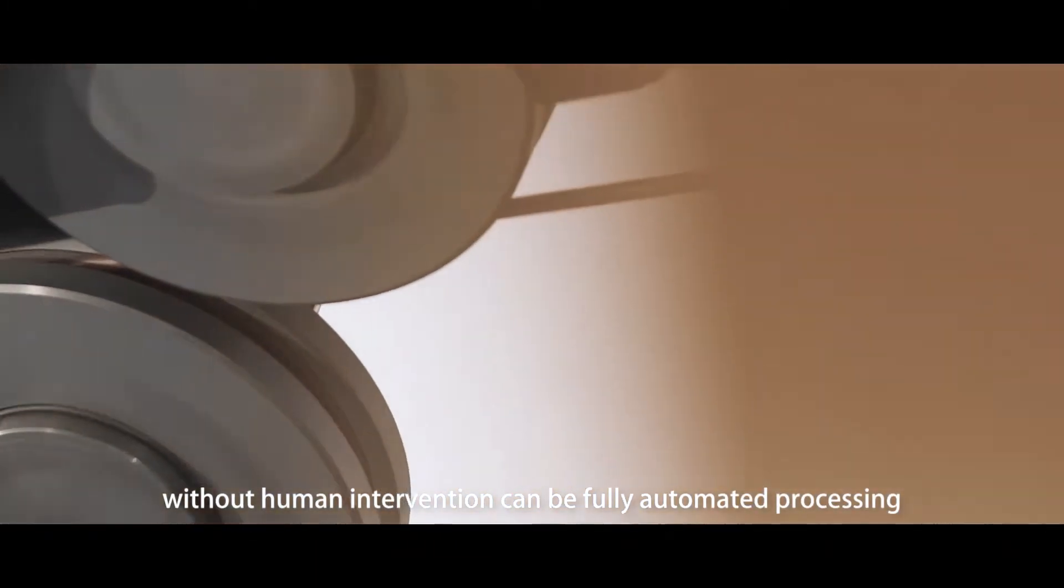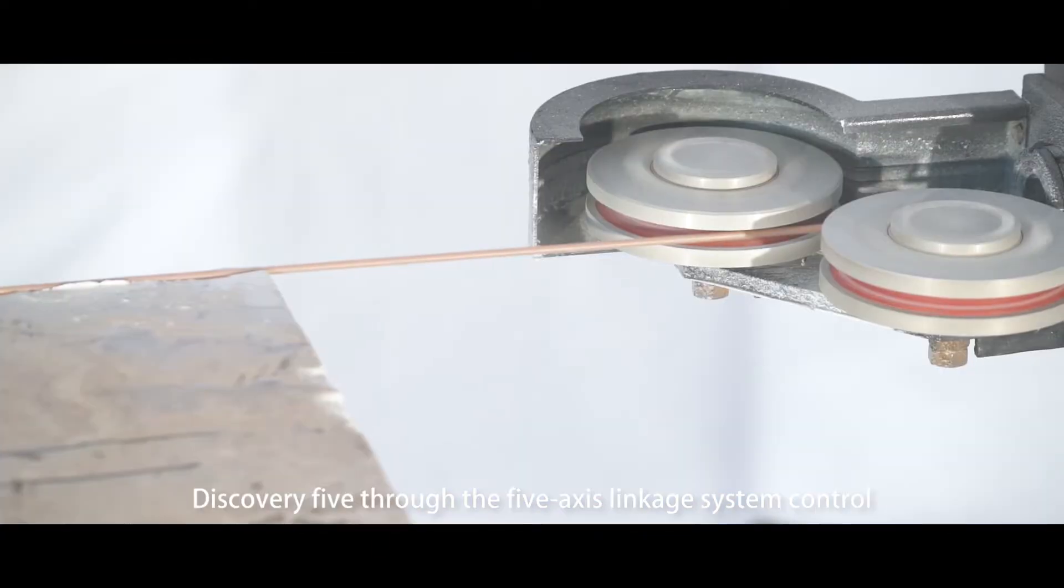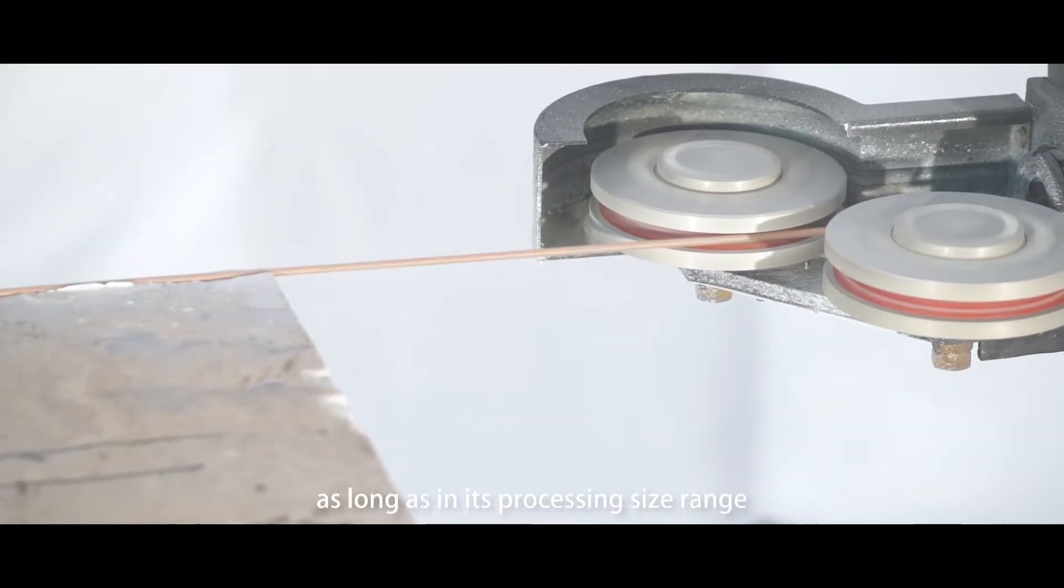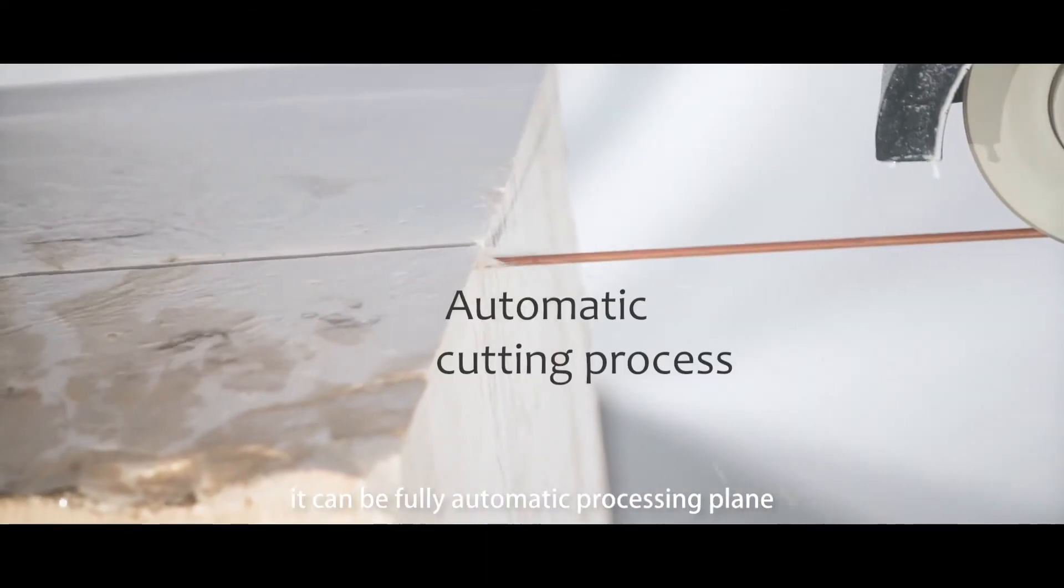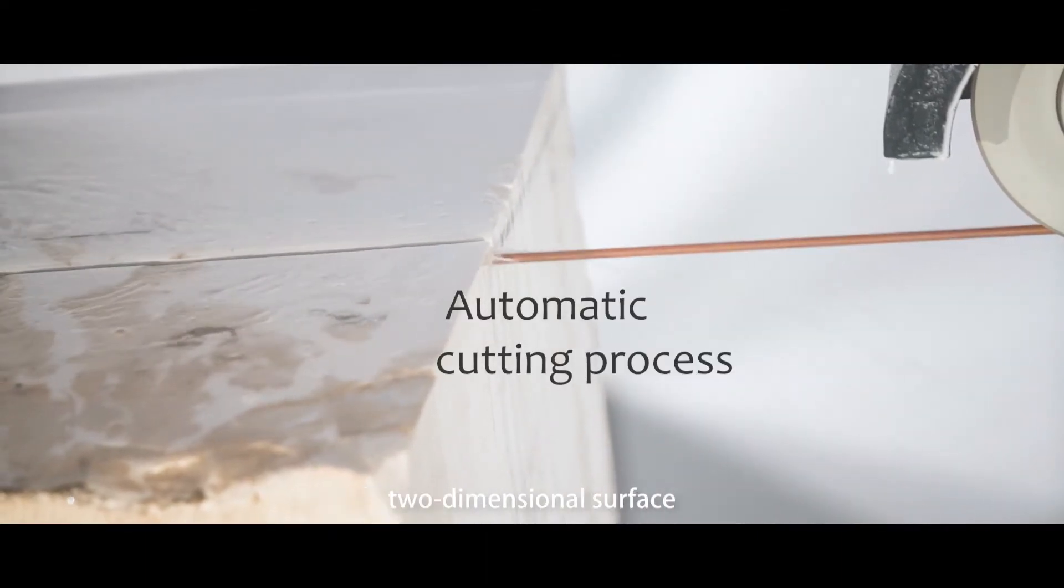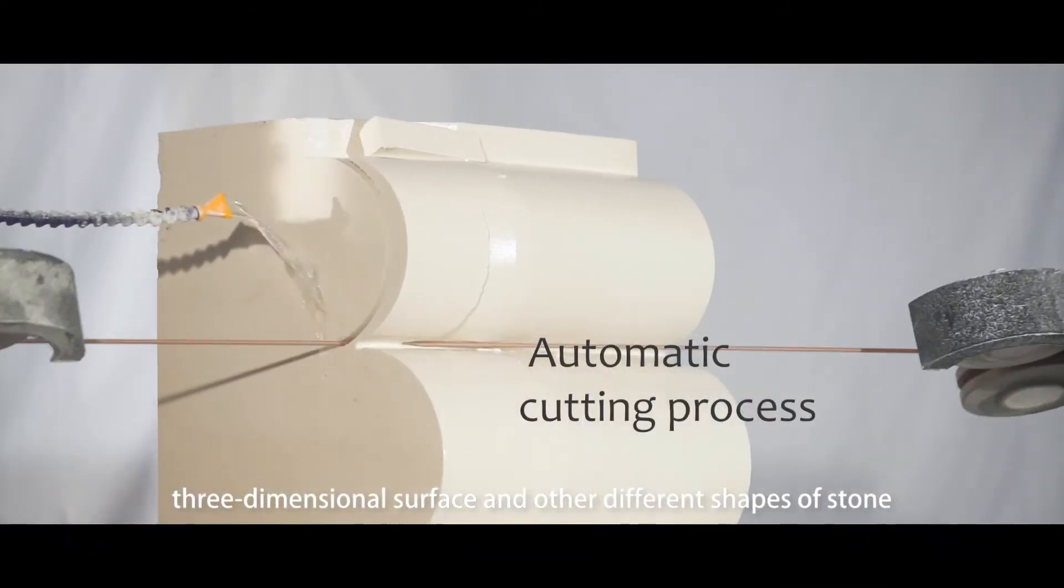Without human intervention, it can be fully automated processing. Discovery 5 through the 5-axis linkage system control can process plane, 2-dimensional surface, 3-dimensional surface, and other different shapes of stone, as long as within its processing size range.